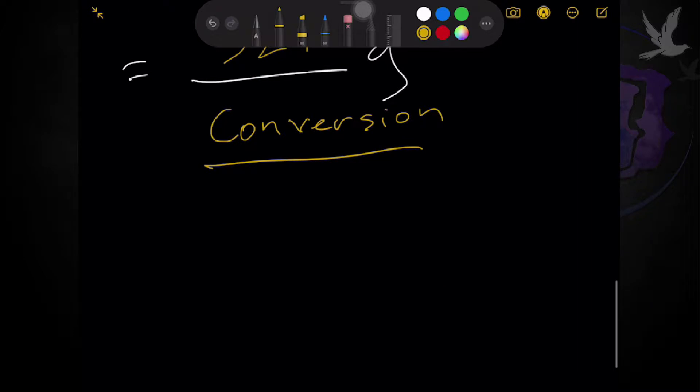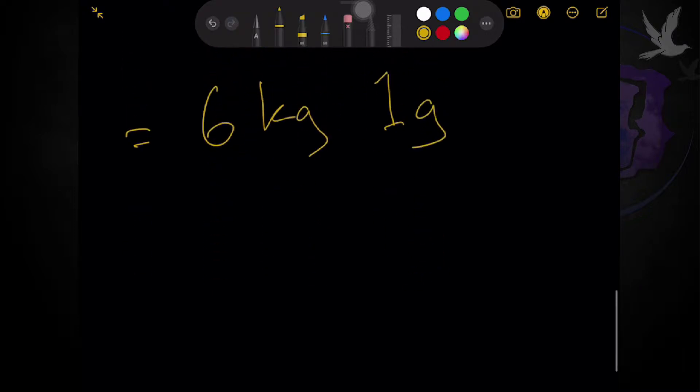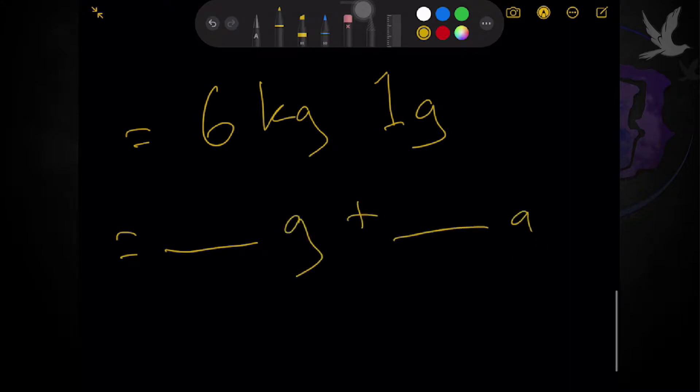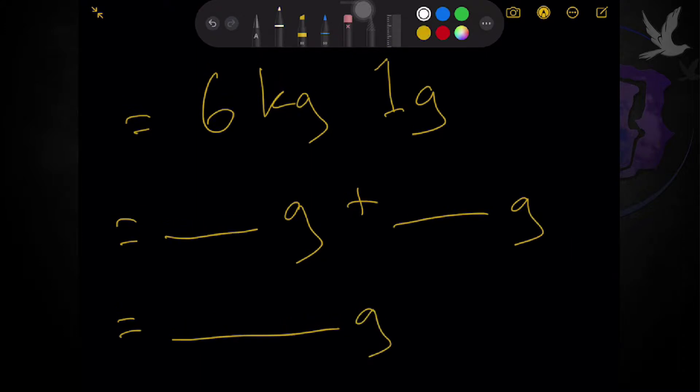Another example, just to clear everyone. 6 kilograms and let's say 1 gram lang. So, breaking it down again, we have blank grams and blank grams. So, total of total grams na meron tayo. So, meron tayong 1 gram lang dito. Just add it there.